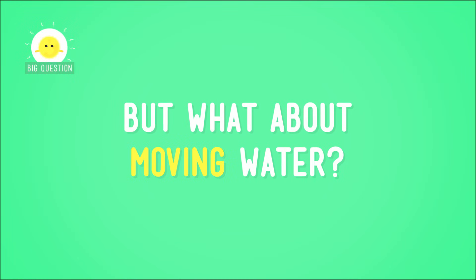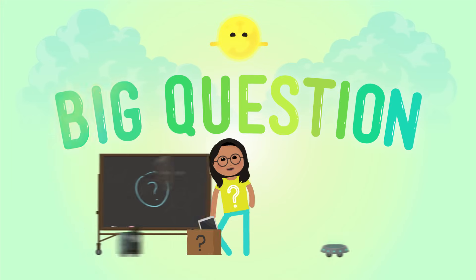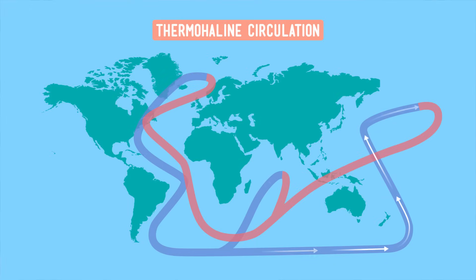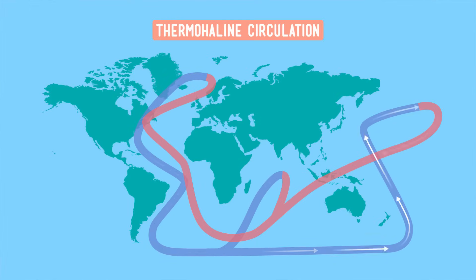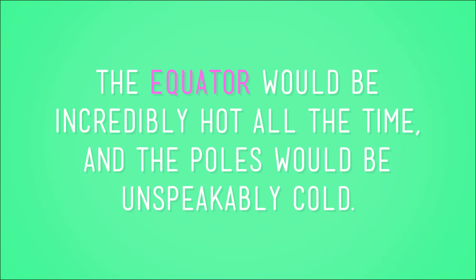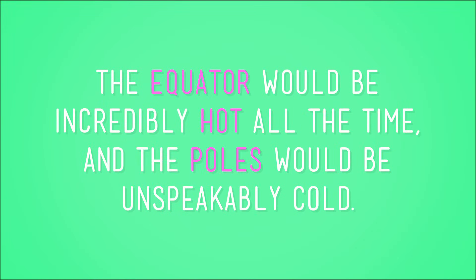But what about moving water? Ocean currents form another kind of cycle. They transport warm water from the equator toward the poles and bring cold water from the poles back down to the tropics. Without those two movements — jet streams and ocean currents — the climate and weather conditions would stay pretty much the same and things would get unpleasant. The equator would be incredibly hot all the time and the poles would be unspeakably cold. In fact, a lot of the Earth would be uninhabitable. So thank goodness for the currents.